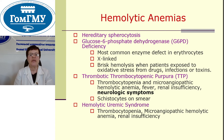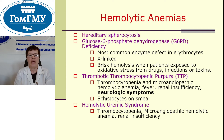Hemolytic anemia: hereditary spherocytosis. Glucose-6-phosphate dehydrogenase deficiency — the most common enzyme defect in erythrocytes, X-linked — causes brisk hemolysis when patients are exposed to oxidative stress from drugs, infections, or toxins. Thrombotic thrombocytopenic purpura: thrombocytopenia and microangiopathic hemolytic anemia, fever, renal insufficiency, and neurologic symptoms.